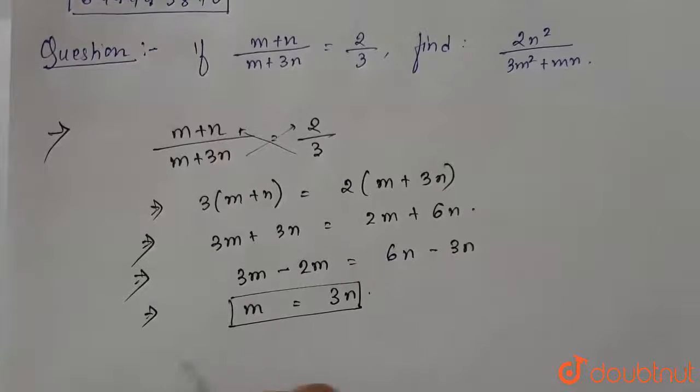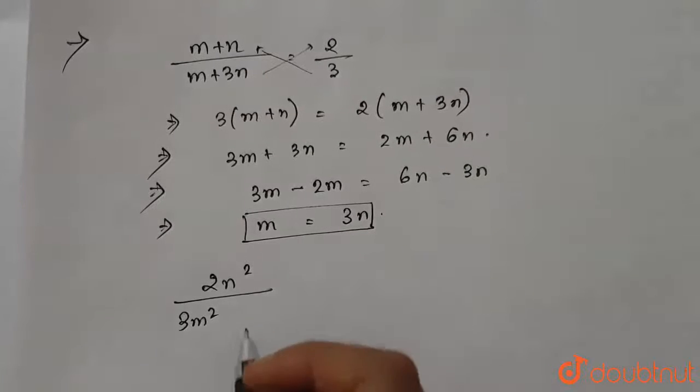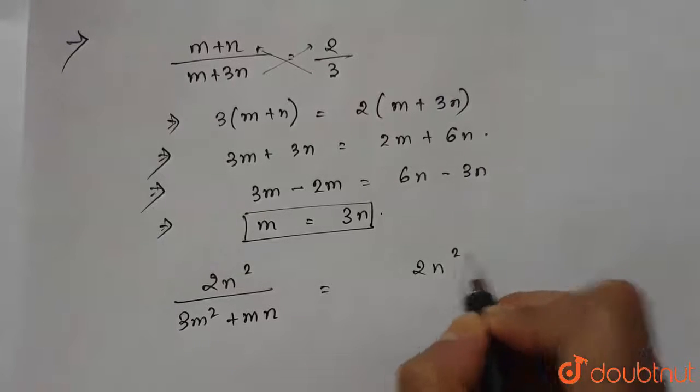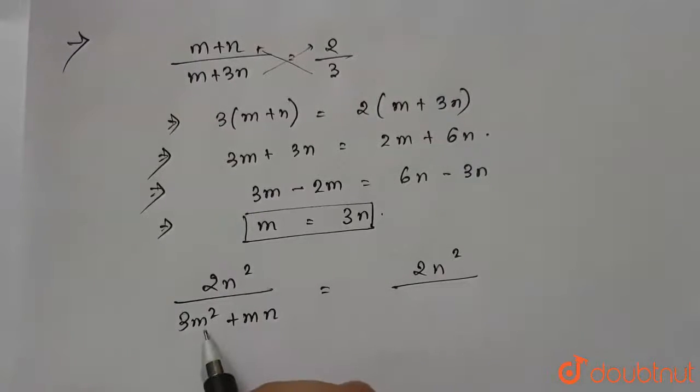Now we have to find the value of 2n squared divided by 3m squared plus m into n. This can be written as 2n squared divided by, we will put m in terms of n, so 3 into 3n whole squared plus m is 3n into n.